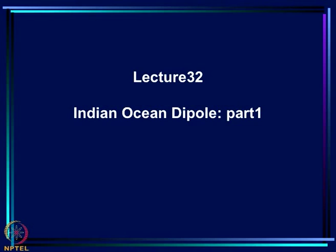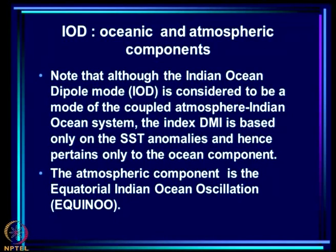Today, I am going to continue our discussion on the Indian Ocean Dipole Mode which we began in the last class. This is the Indian Ocean Dipole Mode, called IOD, and as we noted last time, it has an oceanic component as well as an atmospheric component. Although the IOD is considered a mode of the coupled atmosphere-Indian Ocean system, the index DMI, which we defined in the last class, is the difference of the SST anomalies of the west and east equatorial Indian Ocean. The DMI is based only on the SST anomalies and hence pertains only to the ocean component.